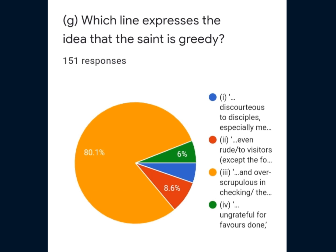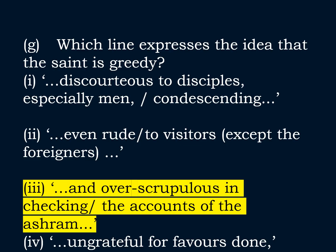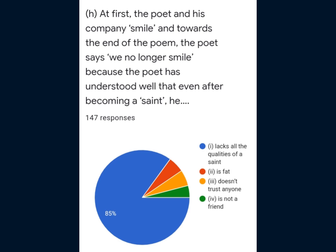This is Question 1, G part. Which line expresses the idea that the saint is greedy? Most students were able to write the correct answer, i.e. option 3: 'and over-scrupulous in checking the accounts of the ashram.' This is Question 1, H part. The majority of students gave the right answer, option 1: at first the poet and his company smile, but towards the end the poet says 'we no longer smile,' because the poet has understood that even after becoming a saint, he lacks all qualities of a saint.